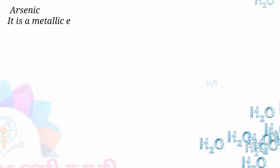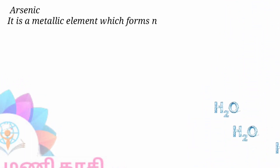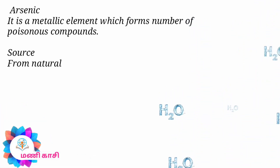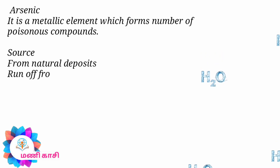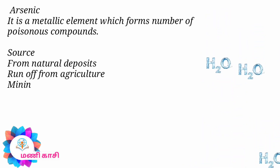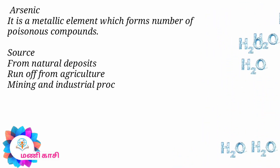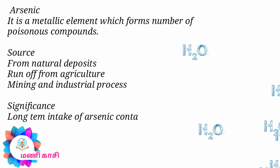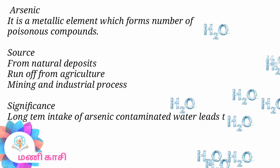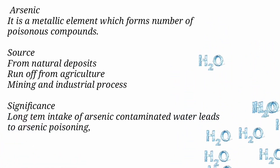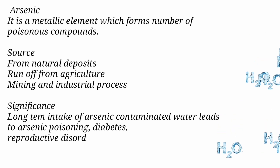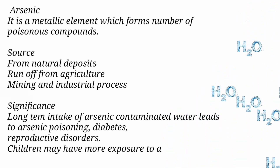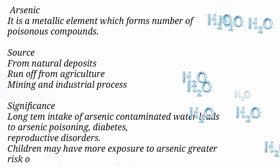Arsenic is a metallic element which forms a number of poisonous compounds. Sources include natural deposits, runoff from agriculture, mining, and industrial purposes. Significance: long-term intake of arsenic-contaminated water leads to arsenic poisoning, diabetes, and reproductive disorders. Children may have more exposure to arsenic, leading to a greater risk of illness.